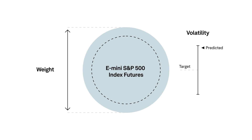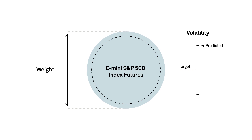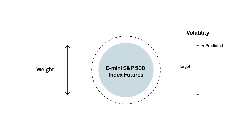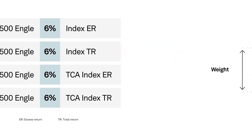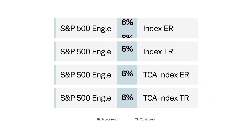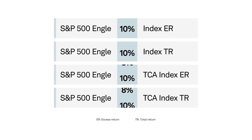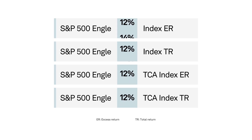When the volatility forecast is above the target, exposure to E-mini S&P 500 index futures decreases. S&P DJI offers several versions of the S&P 500 Engel indices, differing by return type, transaction costs, and volatility target.